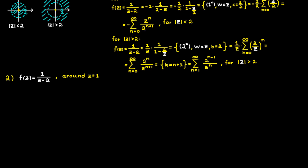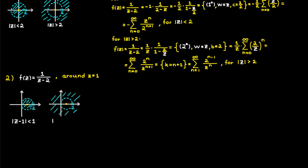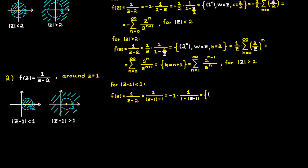In the next problem we have the same function but expand about c equal to one, giving two different domains. For the first domain, we use the first geometric series with w equal to c minus one. We break up minus two in the denominator as minus one minus one, factor out the minus one to switch the terms, and use the first geometric series with w equal to c minus one and constant c equal to one. This gives a series valid inside the appropriate domain.